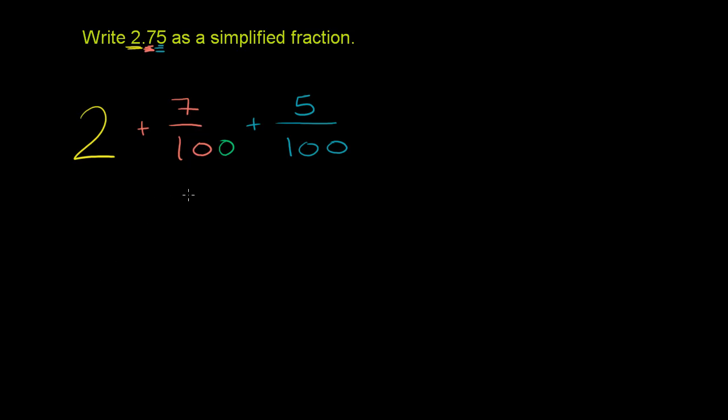But you can't just do that to the denominator. We also have to do that to the numerator. So we multiplied the denominator by 10. Let's also multiply the numerator by 10. 7 times 10 is 70. Or 70 over 100 is the exact same thing as 7 tenths.